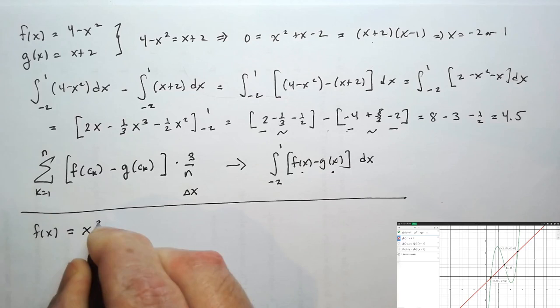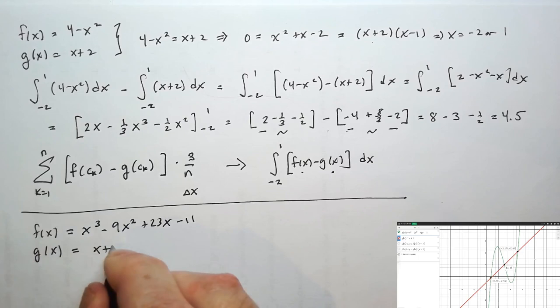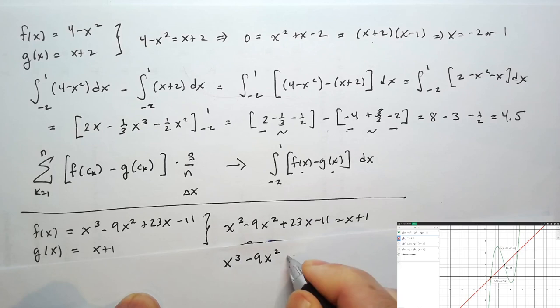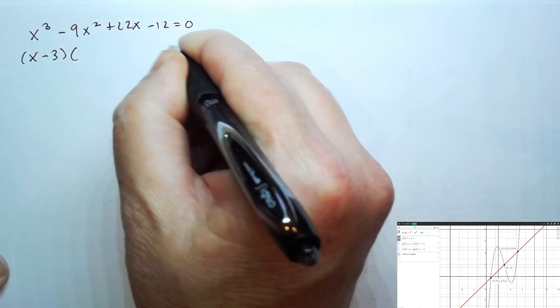In this problem, one function is f(x) = x cubed minus 9x squared plus 23x minus 11, and the other is g(x) = x plus 1. Setting them equal gives us x cubed minus 9x squared plus 22x minus 12 equals 0. Cubic equations are not as easy to solve as quadratics, but we think x equals 3 should be a solution, meaning x minus 3 should be a factor.